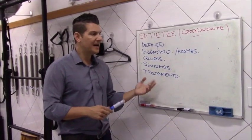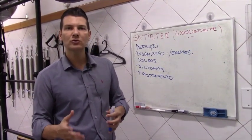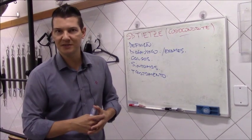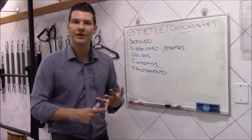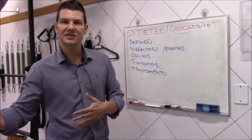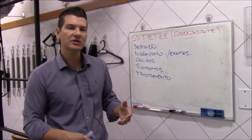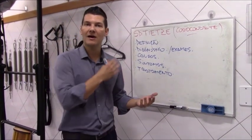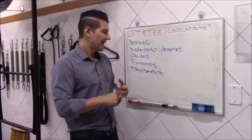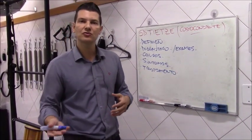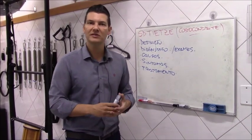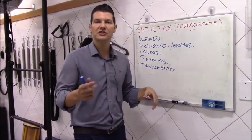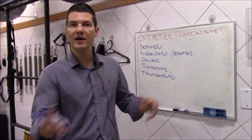O tratamento desses pacientes é basicamente sintomatológico, ou seja, visa tratar os sinais e sintomas apresentados — a dor e o processo inflamatório. Com as prescrições médicas de analgésicos e anti-inflamatórios, e na fisioterapia, inicialmente com o uso do gelo, a crioterapia local de 20 a 30 minutos. Recursos de eletrotermofototerapia, como o laser de baixa intensidade, também são muito interessantes, assim como recursos de eletroterapia, como a corrente combinada associando ultrassom pulsado com corrente interferencial.